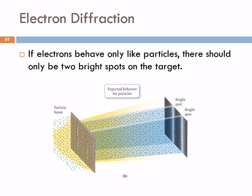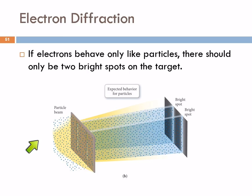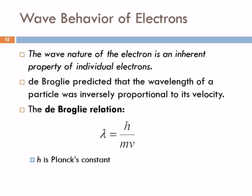If the electrons were only behaving like particles, we should see two bright lines, because as the particles are shot through, the ones that go through would hit the target and the ones that hit the barrier would be stopped. There should be no interference pattern, just two bright lines. The wave nature of the electron is an inherent property of individual electrons.